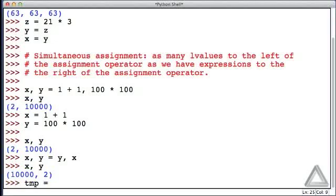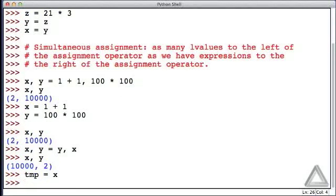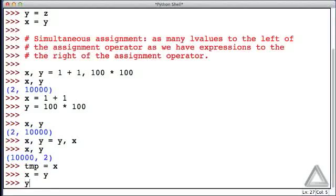Let's call it temp, and let's assign to it the current value of x. So that would be 10,000. And now what we could do is we could say x, we want you to have the value of y. So that would assign the value of 2 to x.